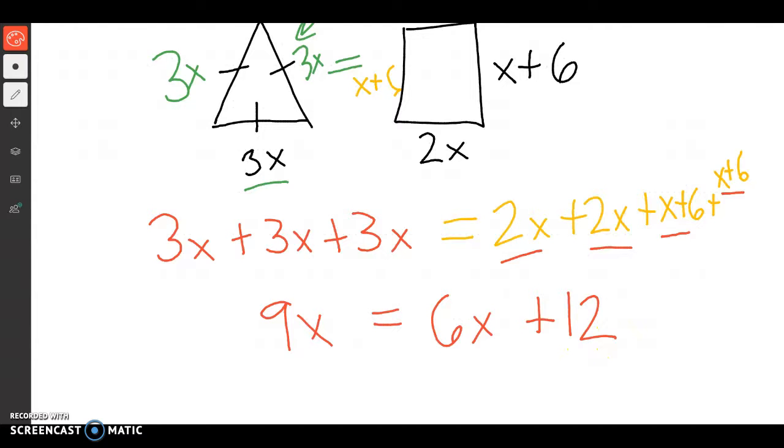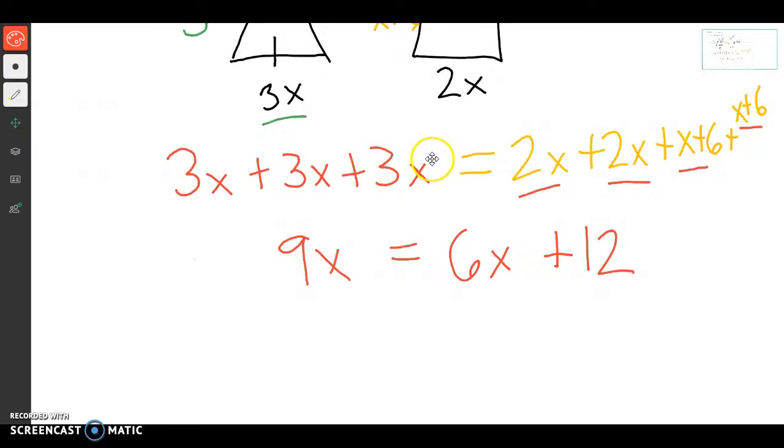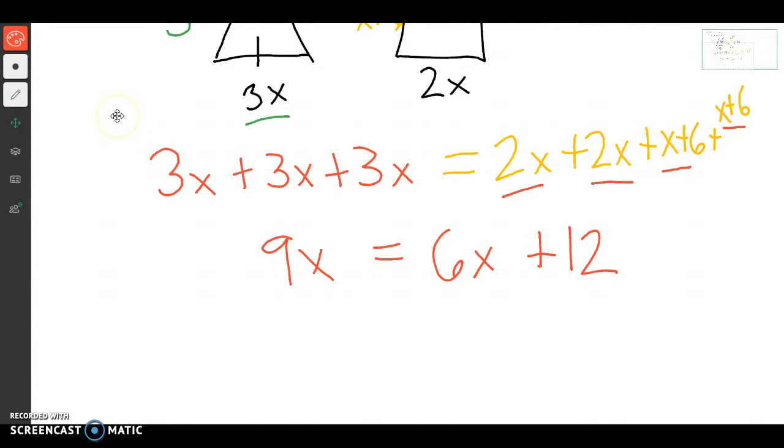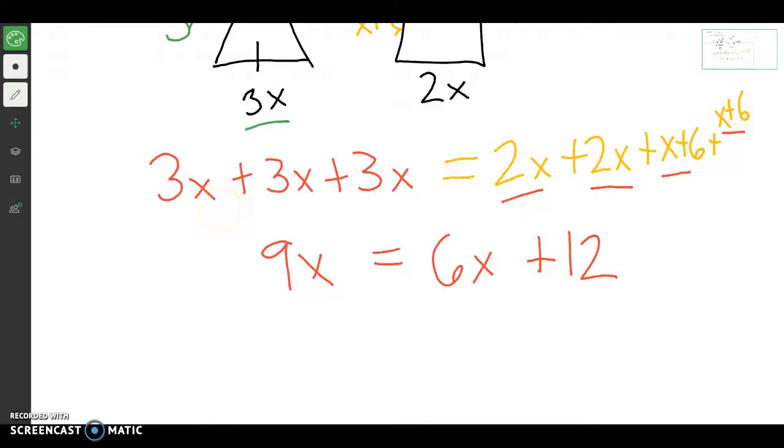And now I'm just going to get x all by itself. And as you can see, in this case, we had variables on both sides. So I had x's on this side, and I had x's on this other side. So since we had variables on both sides, we just solve the rest by getting the variables by themselves. Those cancel out. I'll have 3x equals 12.